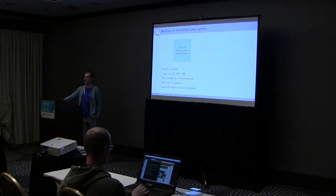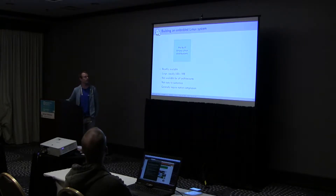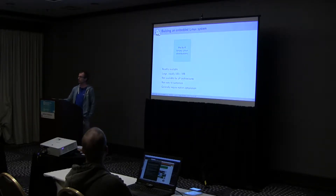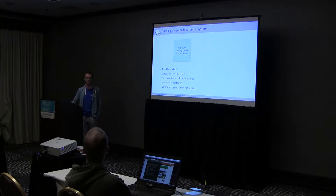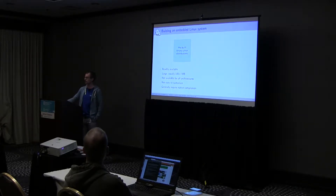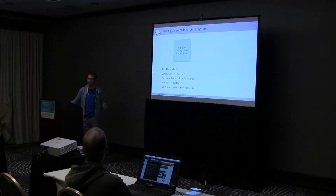When you want to build an embedded Linux system, you've got a couple of solutions available. One of them is to use a pre-built binary distribution like Fedora, Ubuntu, Debian, and there's plenty of others — Armbian, Raspbian, or all those derivatives. The big benefit is that everything is already compiled, uses familiar package management systems, you can easily install new stuff and update packages. It's a familiar environment, so to get started it looks like a good solution.